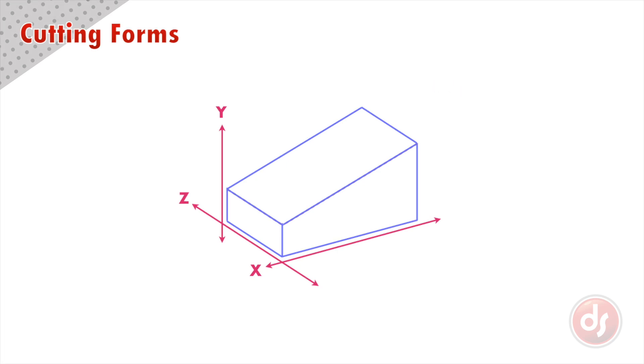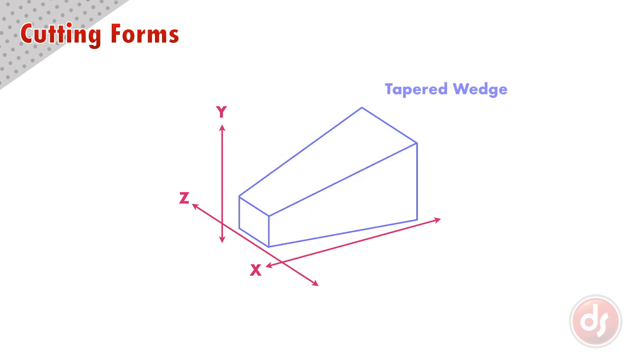We can make it more complex by subdividing the side plane to make it more narrow and connect those points to the back. By removing the sections around it we have made a tapered wedge.